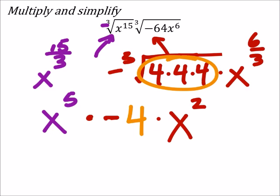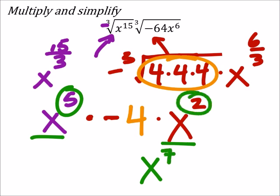Okay? Now, what I need to do is I've got these two base x's, which I can combine. So, that's going to give me x to the power of 5 plus this 2 is 7, and then I still got that negative 4.